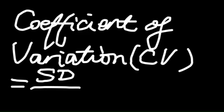And the CV is coefficient of variation. It comes from your standard deviation divided by your mean.